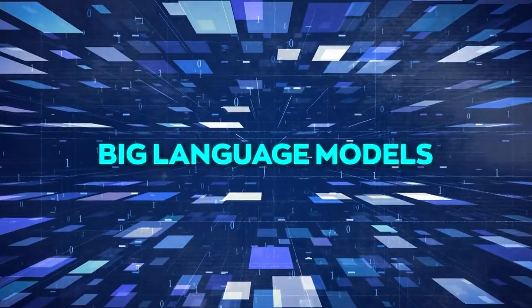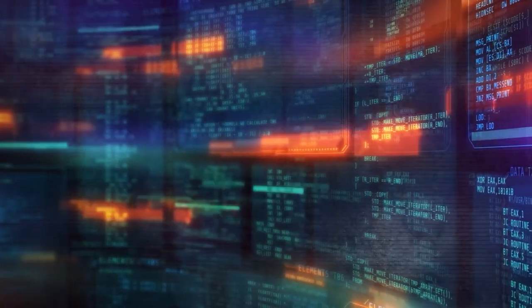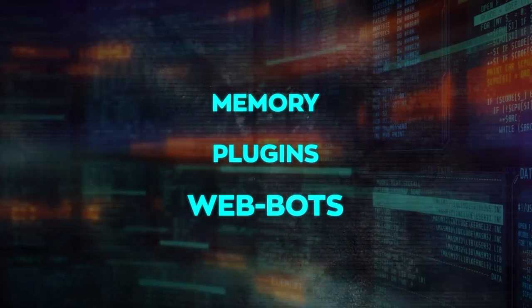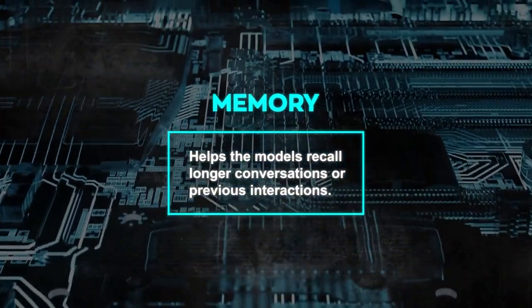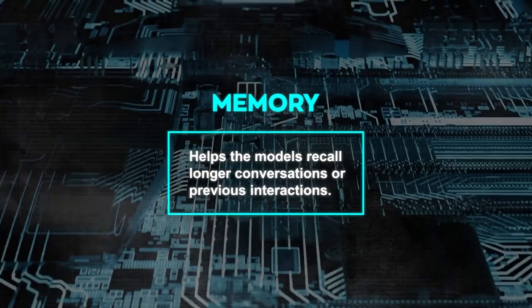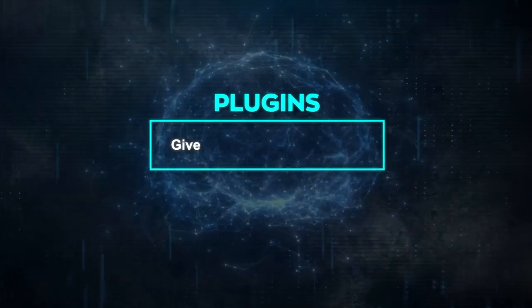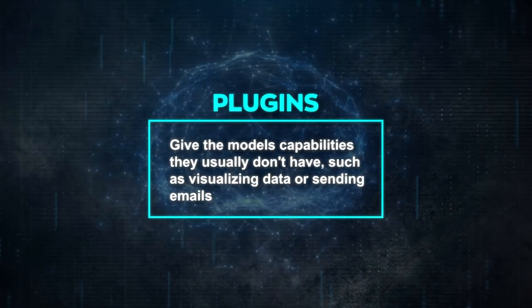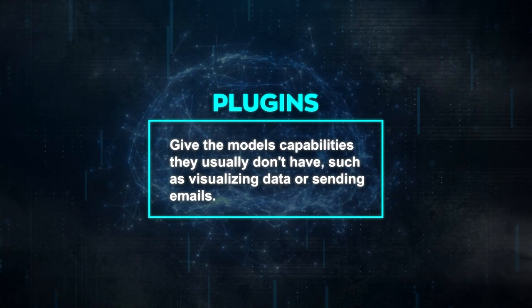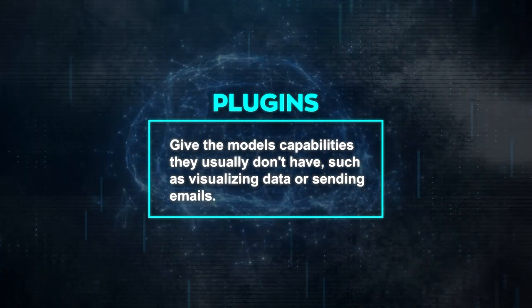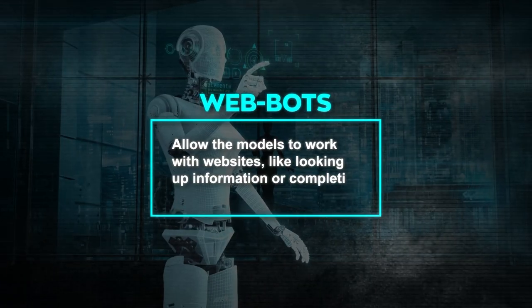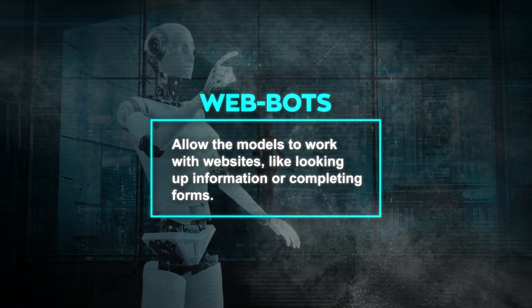OpenAgents uses big language models at its core and improves them by adding three key features: memory, plugins, and web. Memory helps the models recall longer conversations or previous interactions. Plugins give the models capabilities they usually don't have, such as visualizing data or sending emails. Web lets the models work with websites, like looking up information or completing forms.